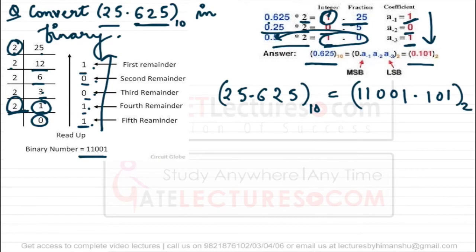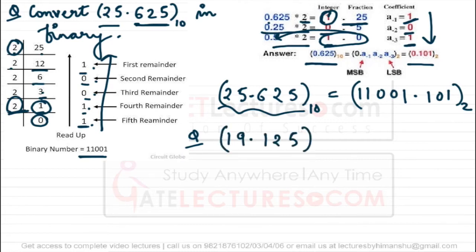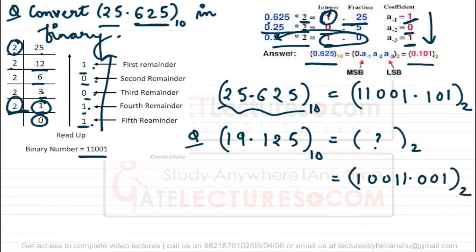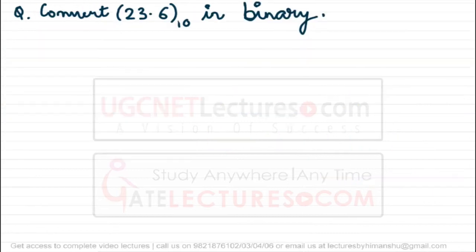That is the binary representation for the given decimal number. For practice, try converting 19.125 to binary — you should get 10011.001. Let us look at one more example: convert 23.6 to binary.